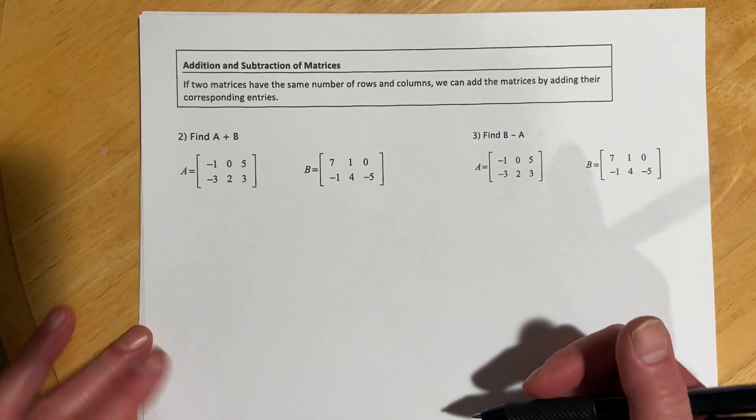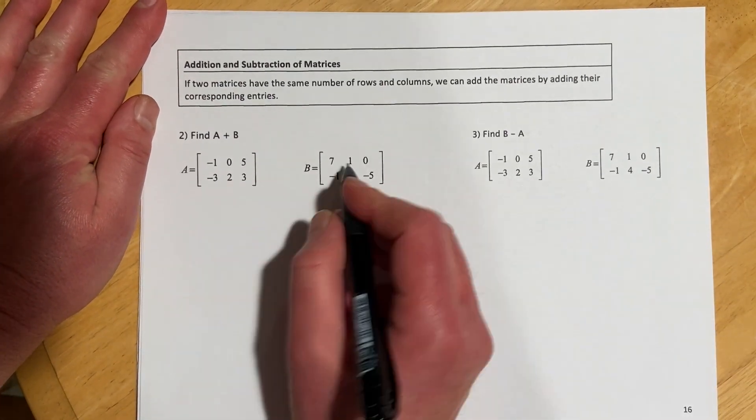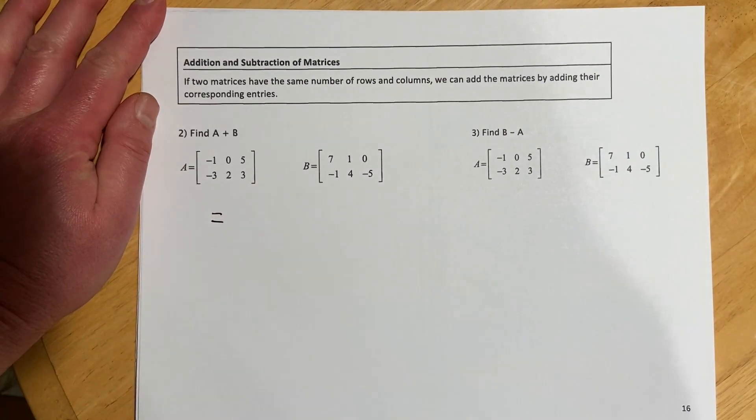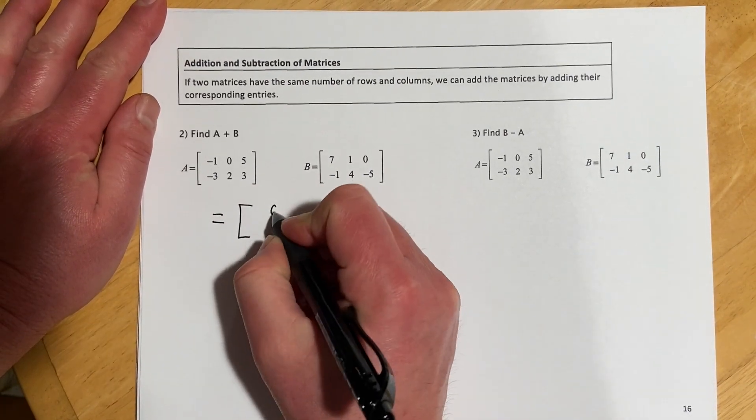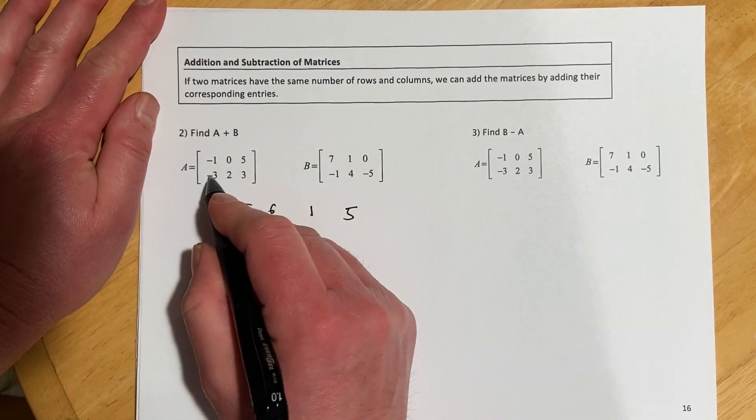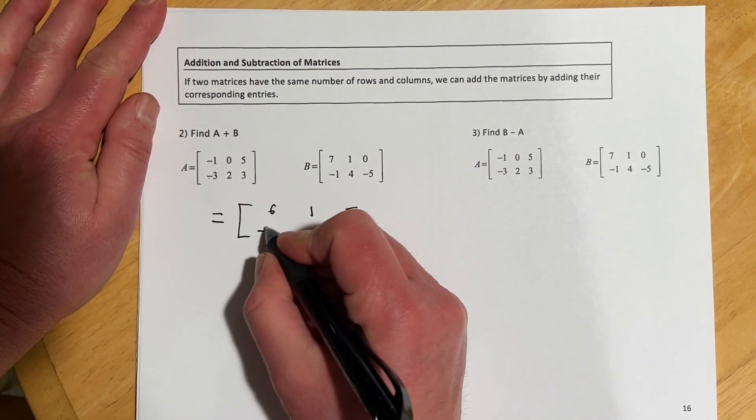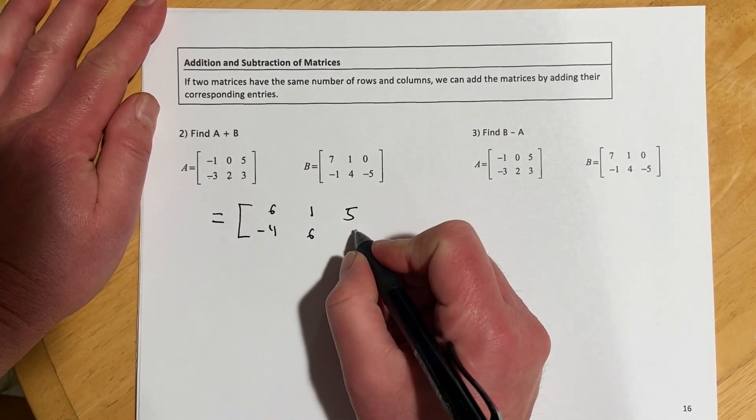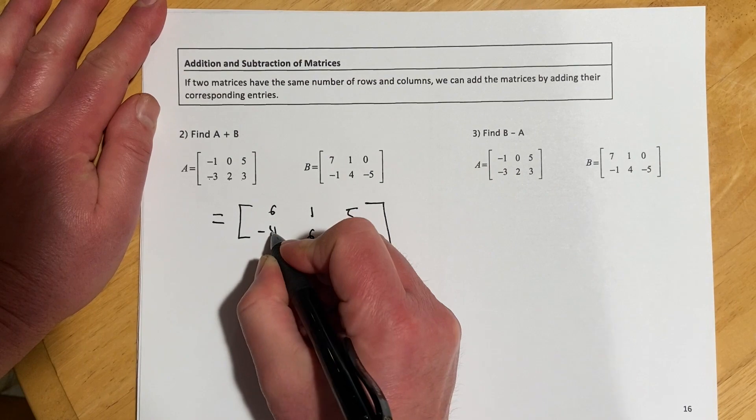So A plus B over here, we'd have negative one and seven. So A plus B will equal six, zero, one for one, five and zero for five. And then negative three and negative one for negative four, two and four for six, three and negative five for negative two.